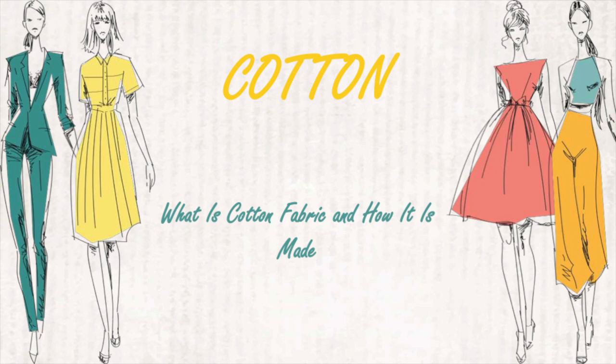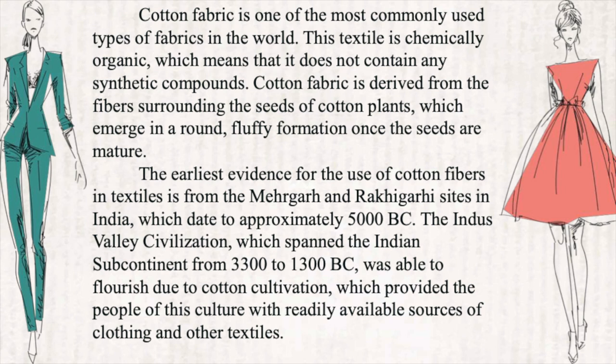Cotton fabric is one of the most commonly used types of fabric in the world. This textile is chemically organic, which means that it does not contain any synthetic compounds. Cotton fabric is derived from the fibers surrounding the seeds of cotton plants, which emerge in a round, fluffy formation once the seeds are mature.